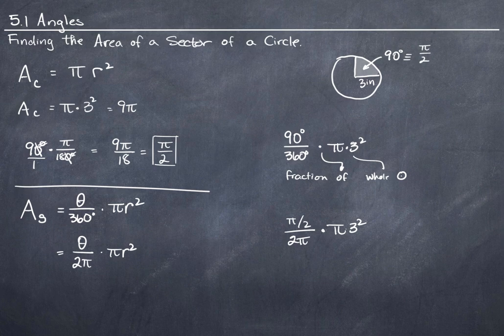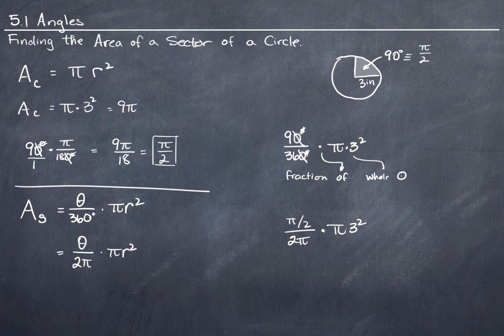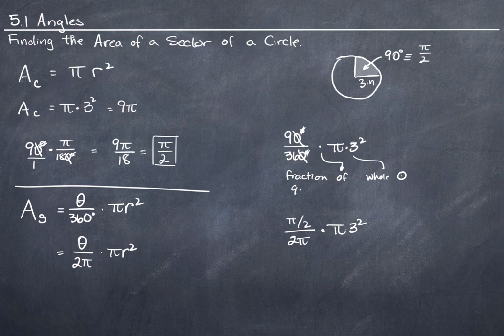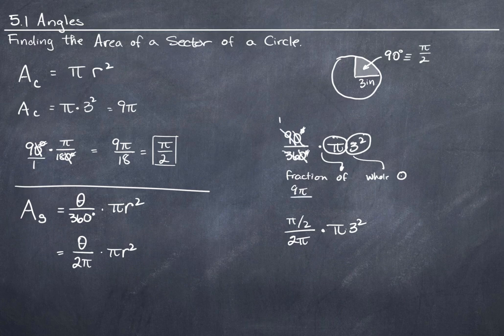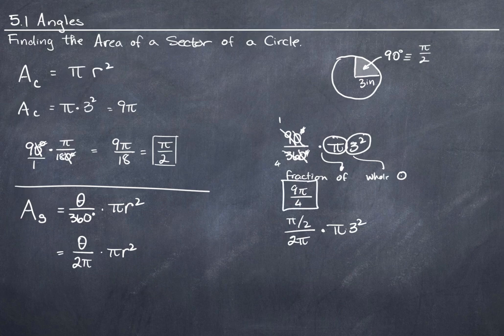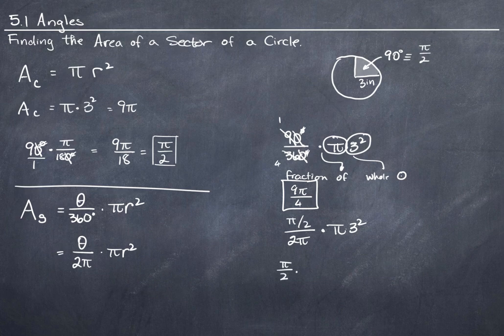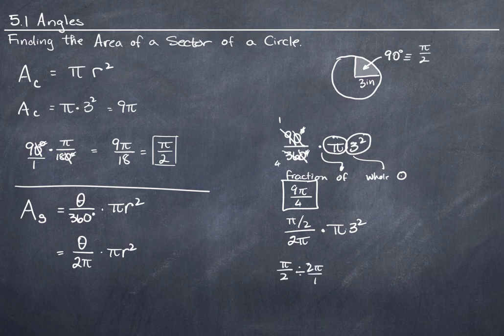And all I have to do now is simplify. So this is going to give me 9 over 36 is 1 fourth. So I'm going to have the 9 pi. I have this 9 right here times this pi right here. 9 goes into that once. 9 goes into that 4. That is the area of that sector.